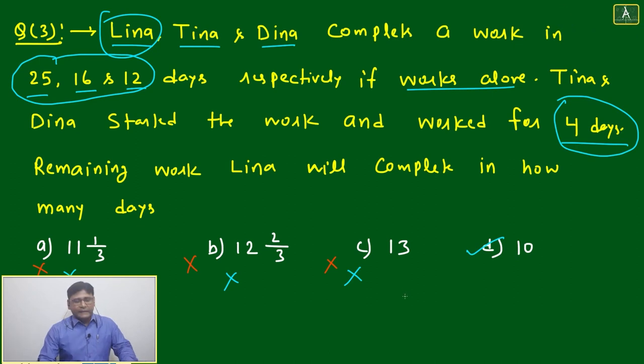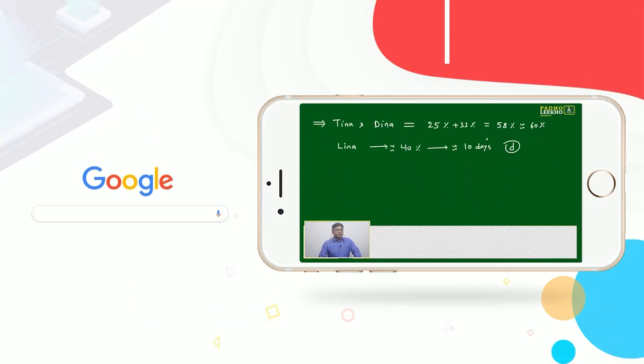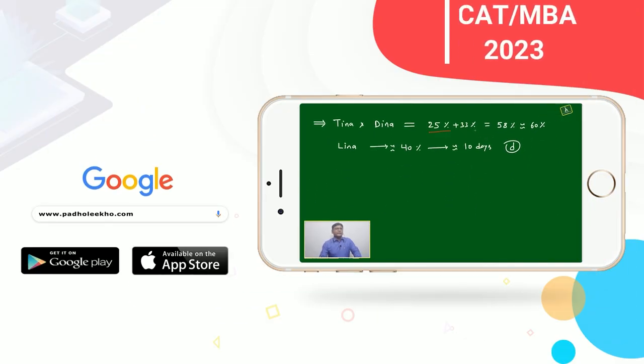D is only there - 10 days. If option is not given, one liner: Tina and Dina, 25%, 33%, 58% approximately 60%. Lena remaining 40%, 10 days. I think everybody is now clear.